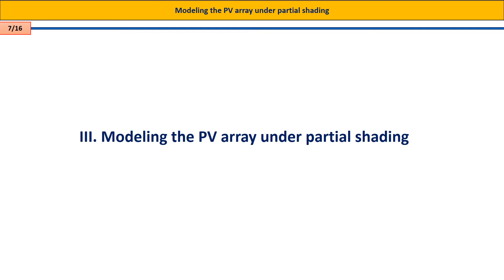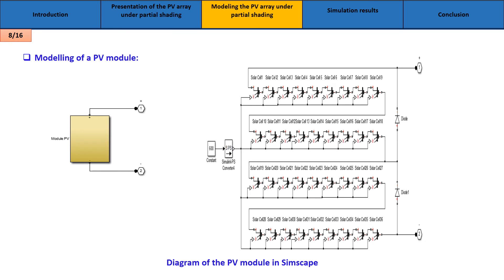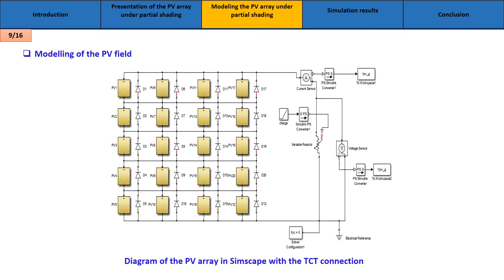These configurations are: Series-Parallel (SP), Series-Parallel (SP), Total Cross-Tied (TCT), Honeycomb (HC), and Bridge-Linked (BL). To model the electrical behavior of the PV module, we use the Simscape tools from MATLAB Simulink. This figure shows the PV module diagram under test in Simscape.